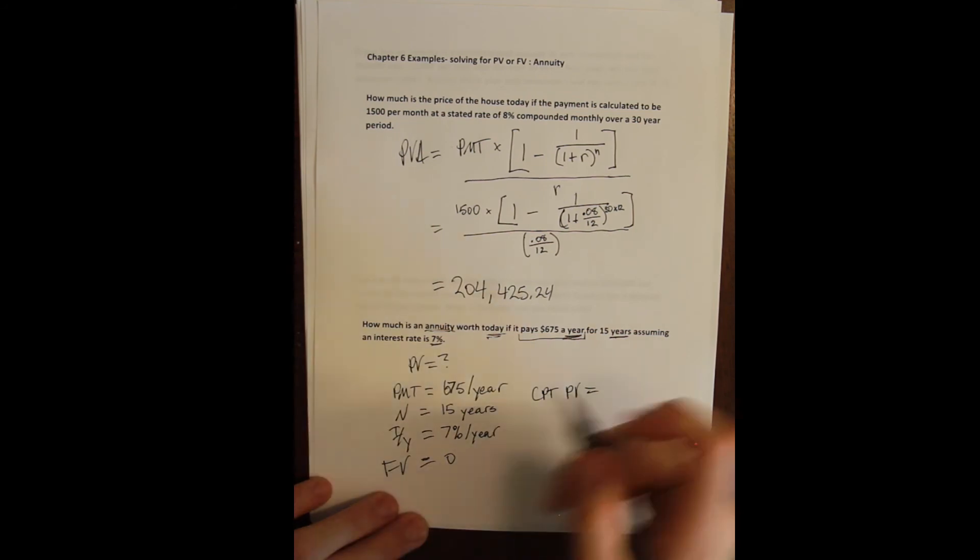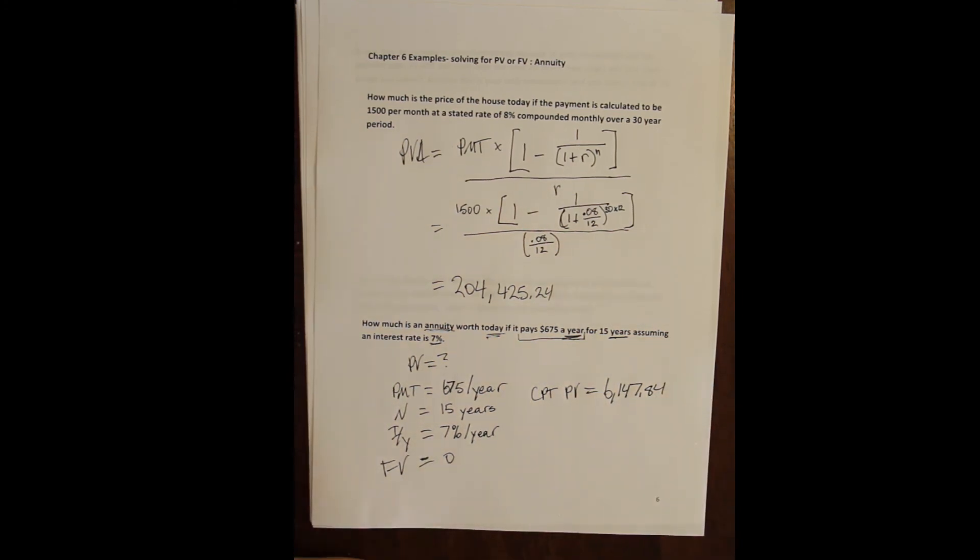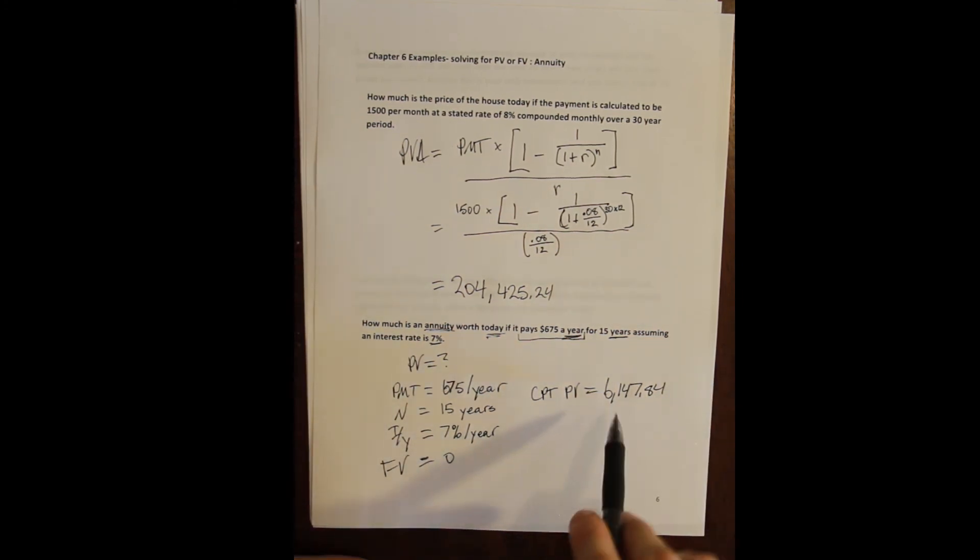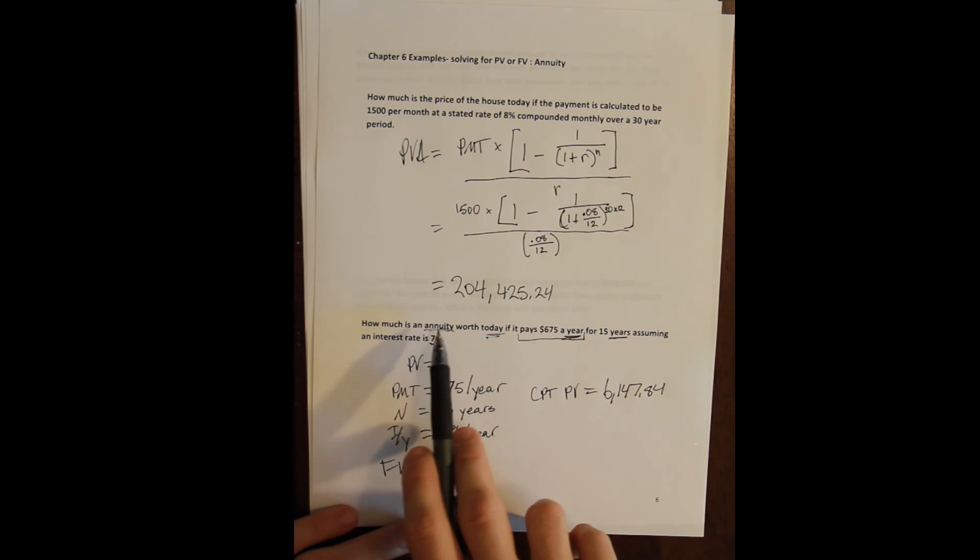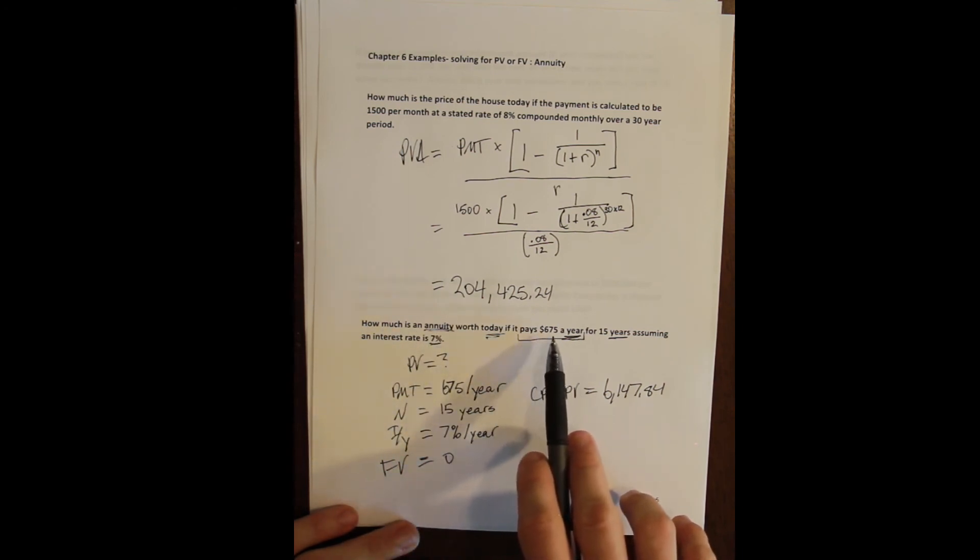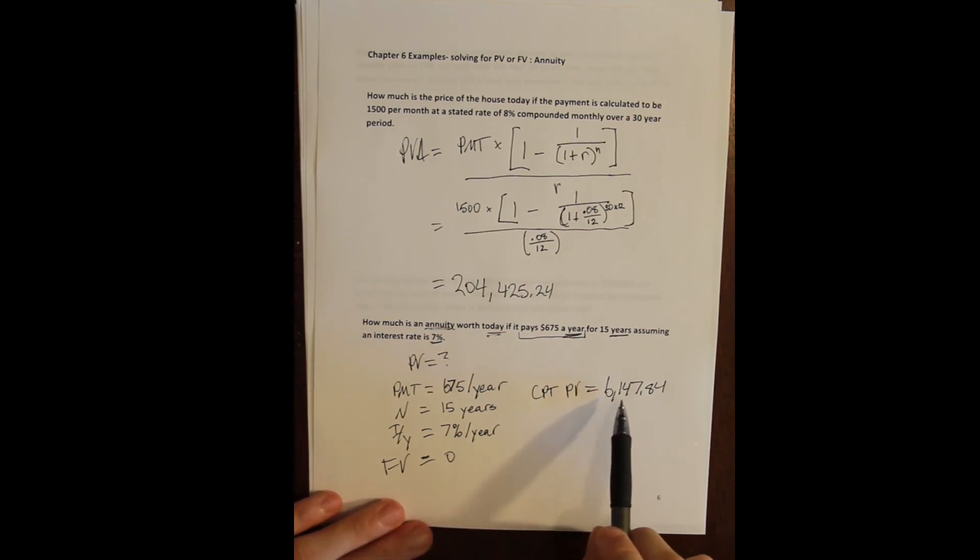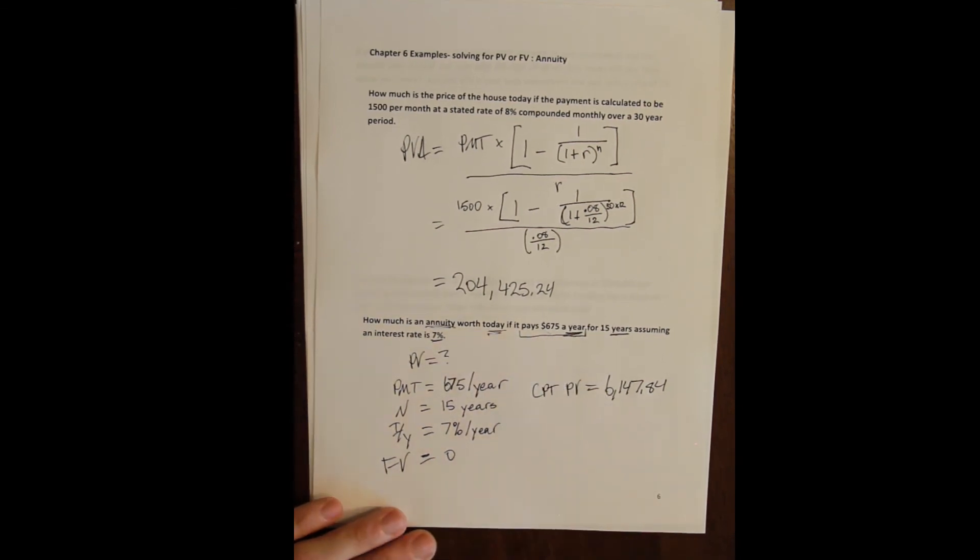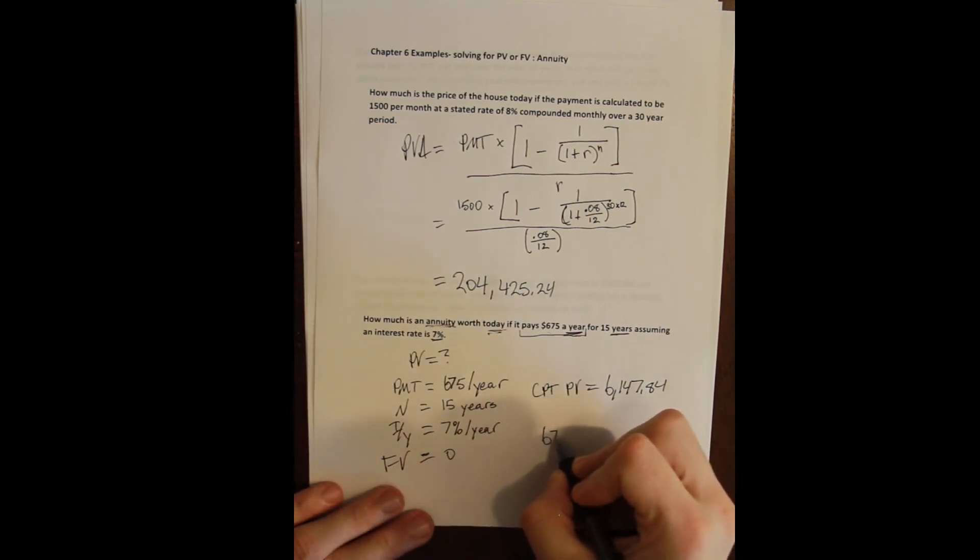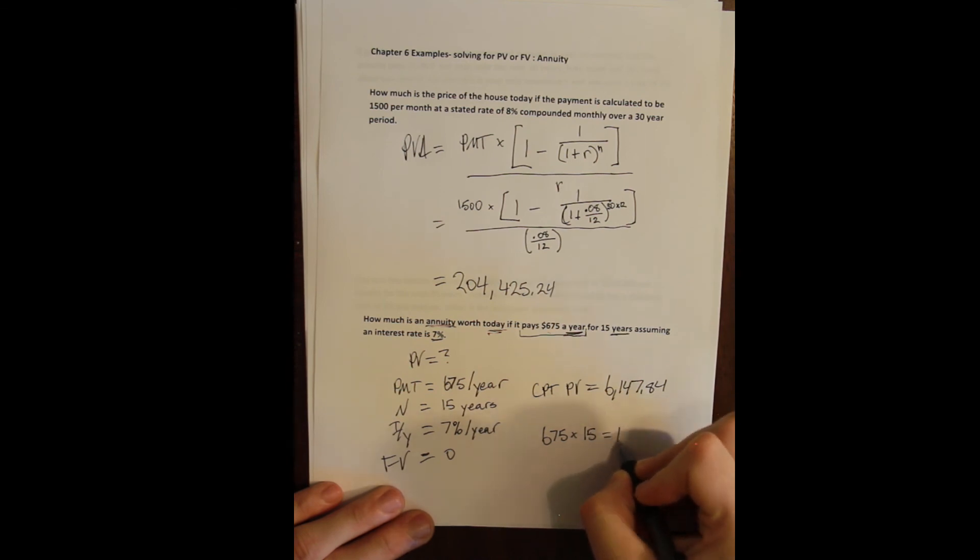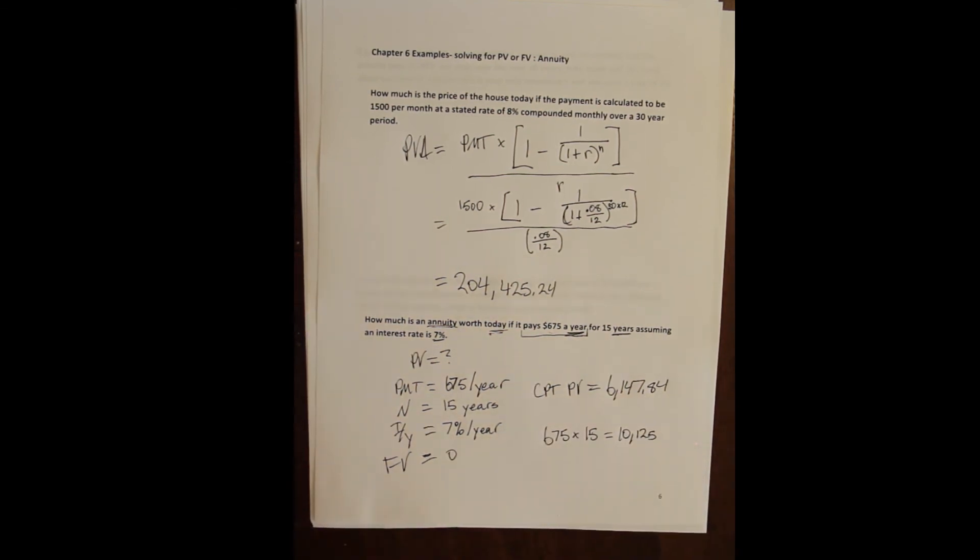Zero is the default, so it's not like we have to do anything there. We compute the present value of this problem, and we get $6,147.84. So this is what we'd be willing to pay in order to get the investment, whatever the annuity is, that will then pay us $675 a year. So we'd be willing to give someone $6,000 now if they're willing to give us $675 a year for 15 years. And that has a total value of $10,125. So that difference is the time value of money. We'd be willing to give you this now if you're willing to give us all this later.